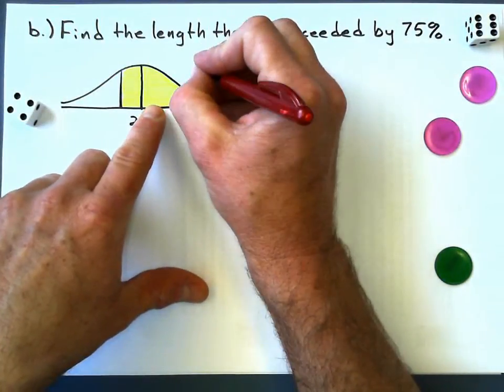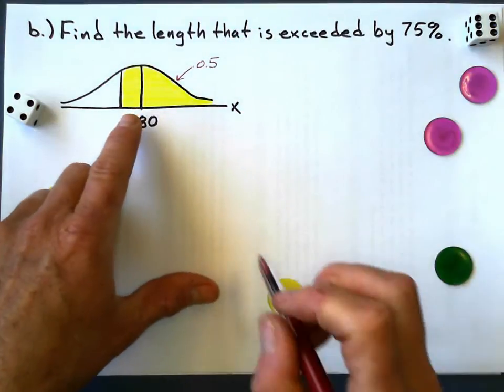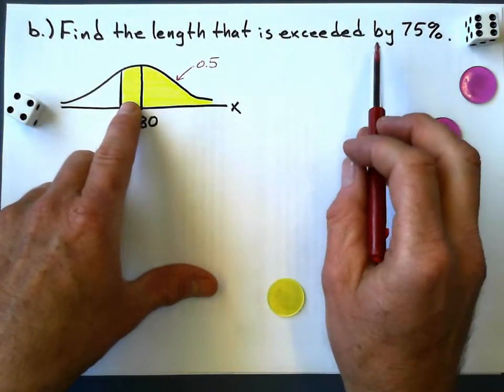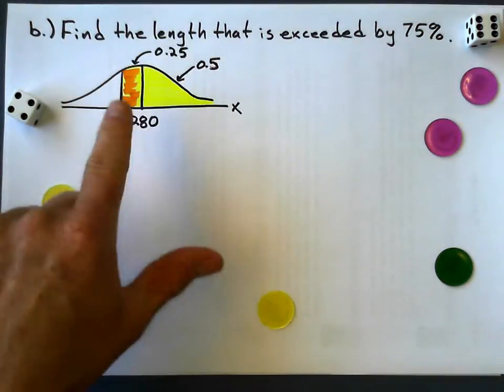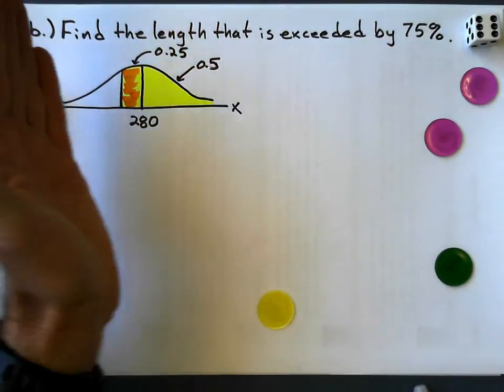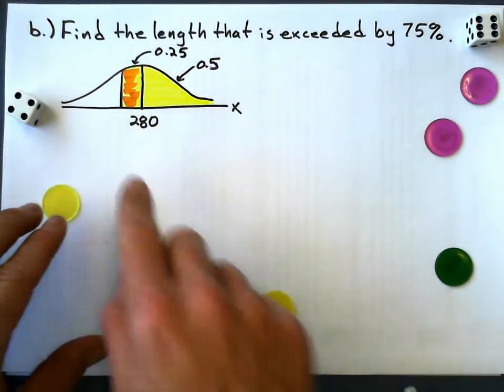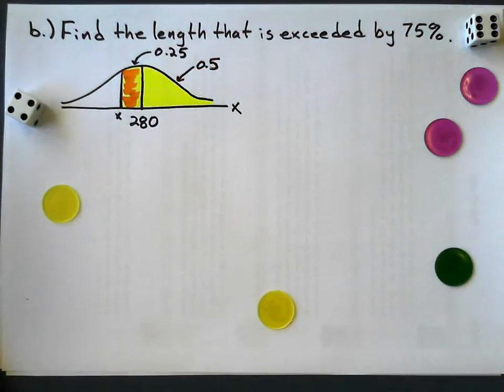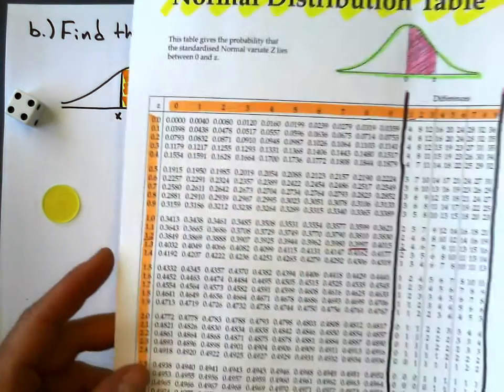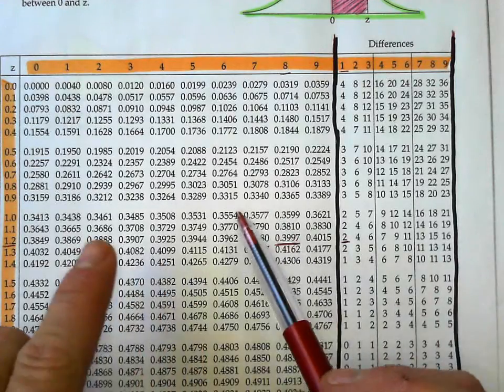So thinking about this, this side, of course, is just 0.5. And that part right there, to add up to 75%, it's going to be 0.25. So I do my shading appropriately. That's everything more than this. I'm trying to solve for that value. And I'm going to look up 0.25 on my probability chart, like I did last time, and I see how close I can get.